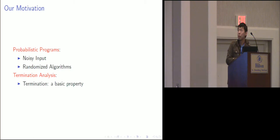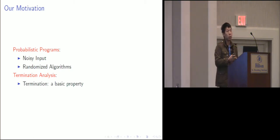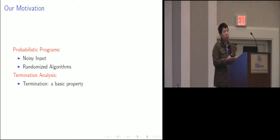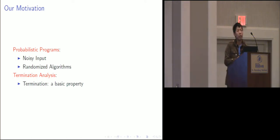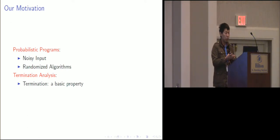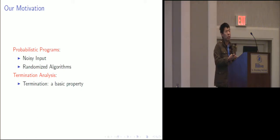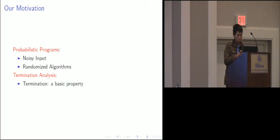In this talk, we consider two concepts. The first one is probabilistic programs, which are programs with simple variables and also random branches. The motivation is that when we are tackling noisy inputs, the phenomenon of probability is unavoidable. And even in some cases, for example in the case of random algorithms, we even make probability in programs on purpose.